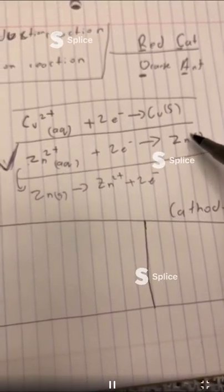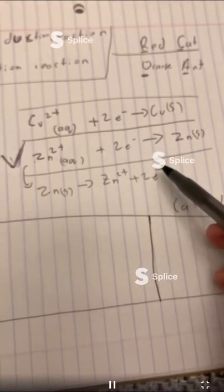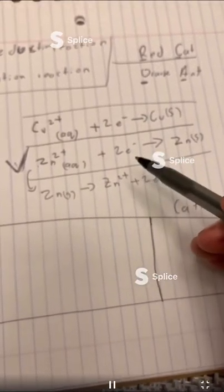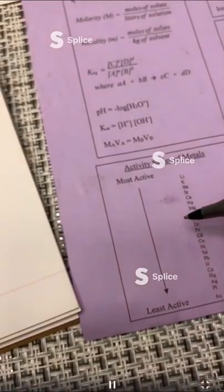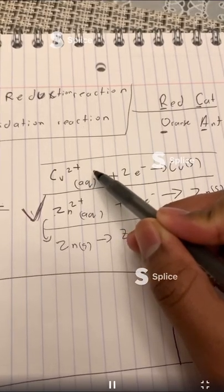And it only flips if it is the more active element. The other one that is not the most active stays the same.